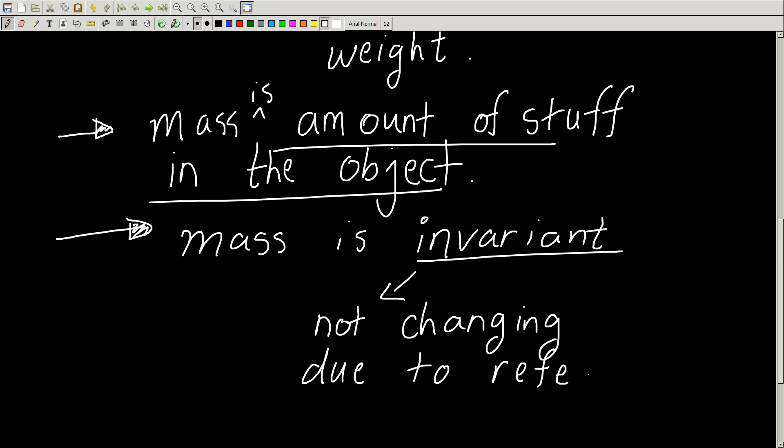Not changing due to reference frame. So I can be anywhere, and my mass is a quantity that won't change. I can be on the earth, I can be on the moon, I can be on Jupiter, I can be on Saturn, I can be on Pluto, and they all exert a different force on me, but me, who I am, doesn't change. That's the mass.